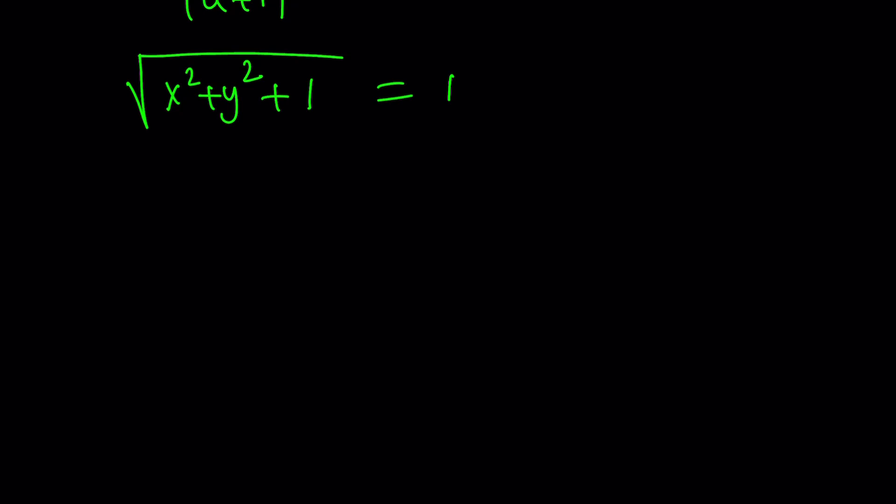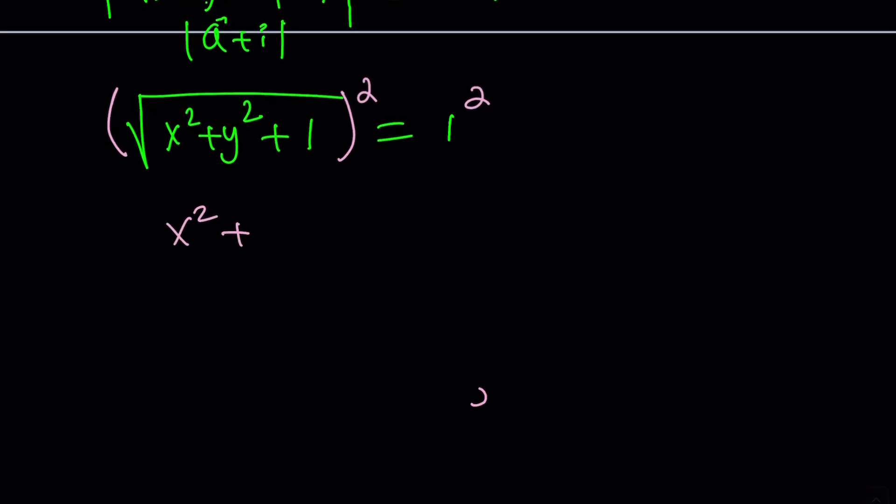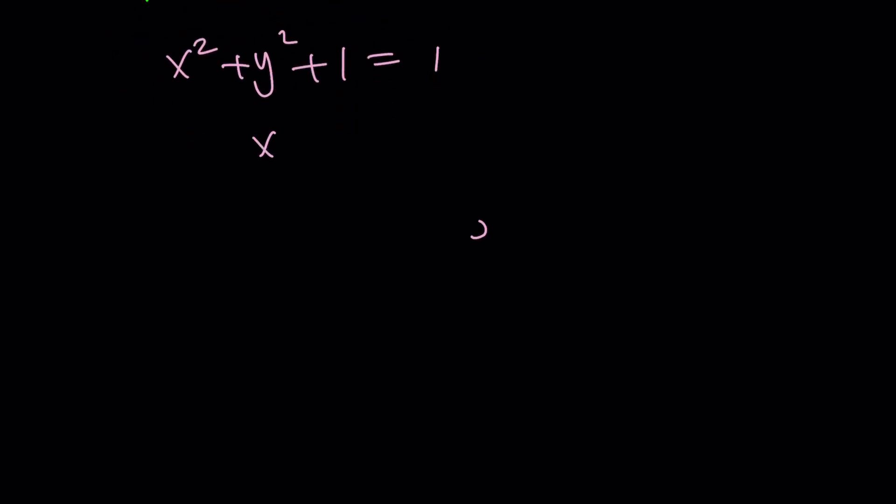To get an equation in X and Y, let's square both sides. And then we're going to get rid of the radical. And then subtract 1 from both sides. Apply the sauce. Abracadabra. Hocus Pocus. Mathemagic. Yay. We get this.